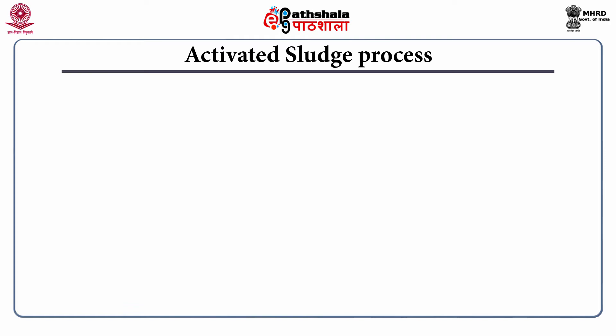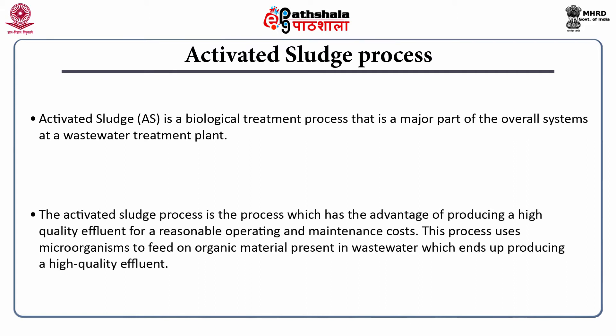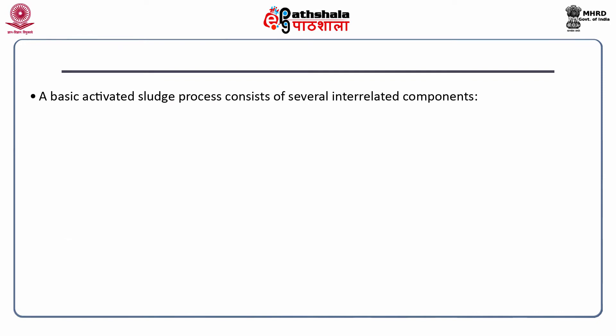Activated sludge process is a biological treatment process that is a major part of the overall system at a wastewater treatment plant. It has the advantage of producing a high-quality effluent for a reasonable operating and maintenance cost. A basic activated sludge process consists of several interrelated components. The first component is an aeration tank where the biological reactions actually occur. These aeration tanks may be of different shape — square type, circular type, etc.